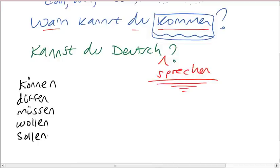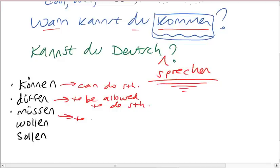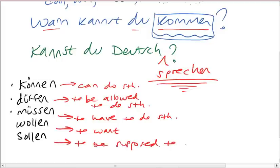So three of these have umlauts. Können basically means to can. Can you do something? Can I do something? Dürfen is to be allowed to do something. Müssen is to have to do something. Wollen is to want something or to do something.